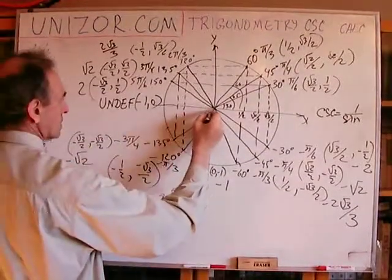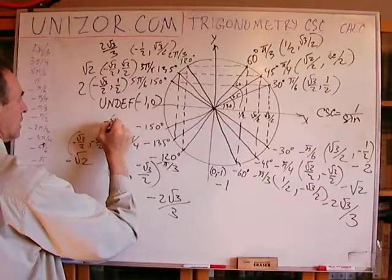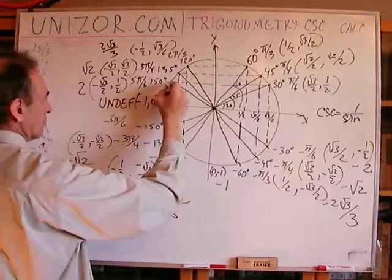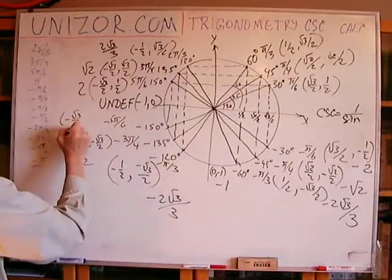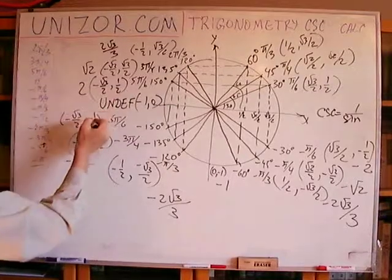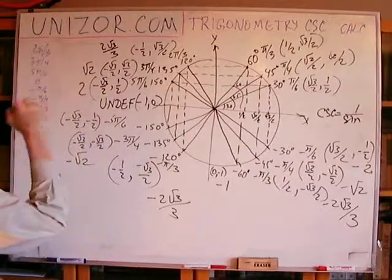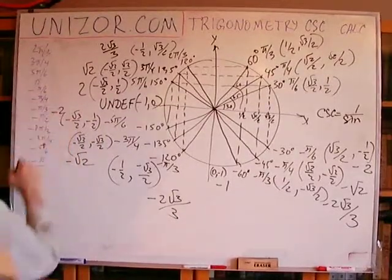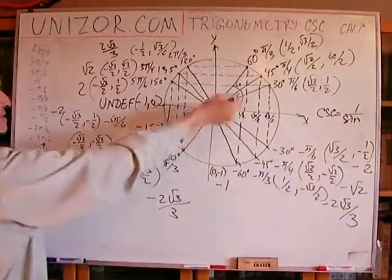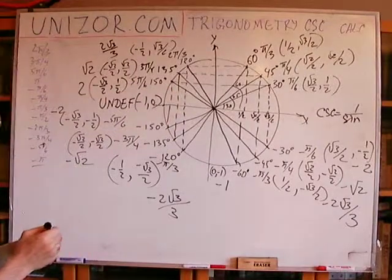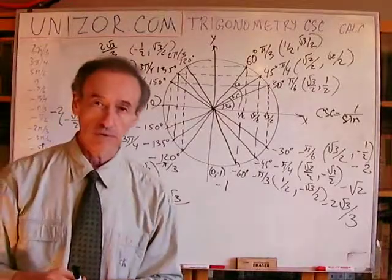Next is minus 150 degrees, which is minus five pi over six, symmetrical to the 150-degree point. The coordinates are minus square root of three over two, minus one-half. Inverting the ordinate, the cosecant is the inverse of minus one-half, which is minus two. And finally, minus pi, which is the same as plus pi, has coordinates minus one, zero, so cosecant is undefined — you cannot divide by zero.